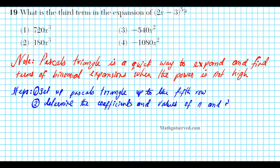Let's take a look at problem number 19. It says, what is the third term in the expansion of (2x minus 3) raised to the fifth power? There are three ways to solve this: multiply it out five times (unnecessary), or use the binomial theorem or Pascal's triangle. Pascal's triangle is quick for lower powers like fifth or sixth. For higher powers like 50, use the binomial theorem. We'll set up Pascal's triangle to the fifth row.